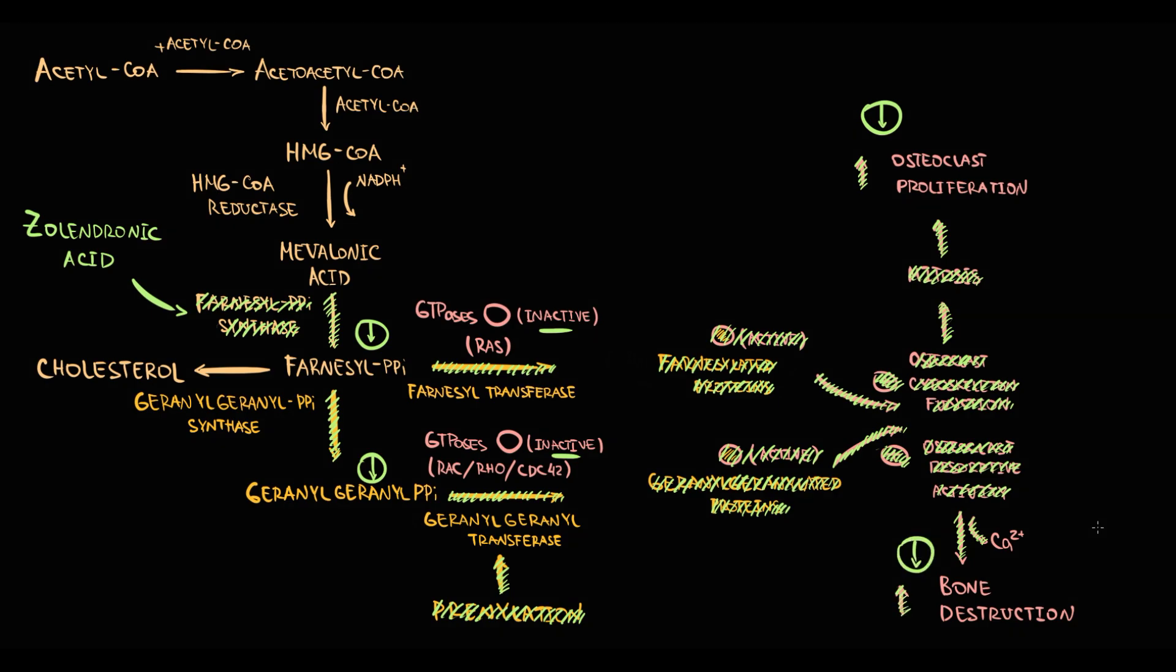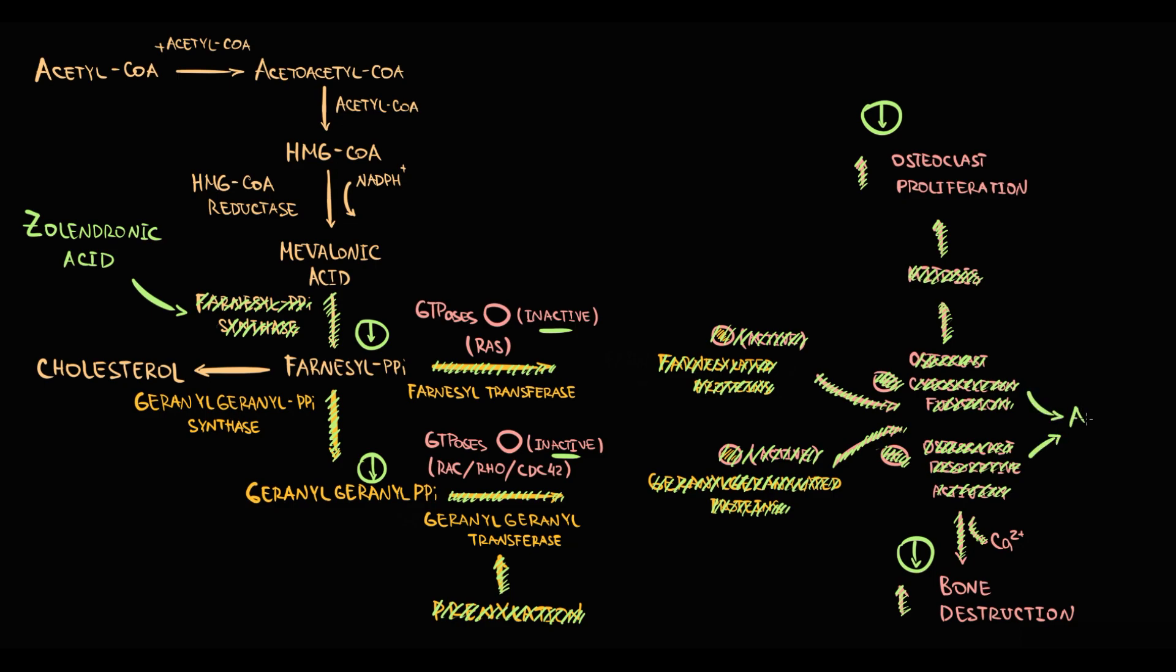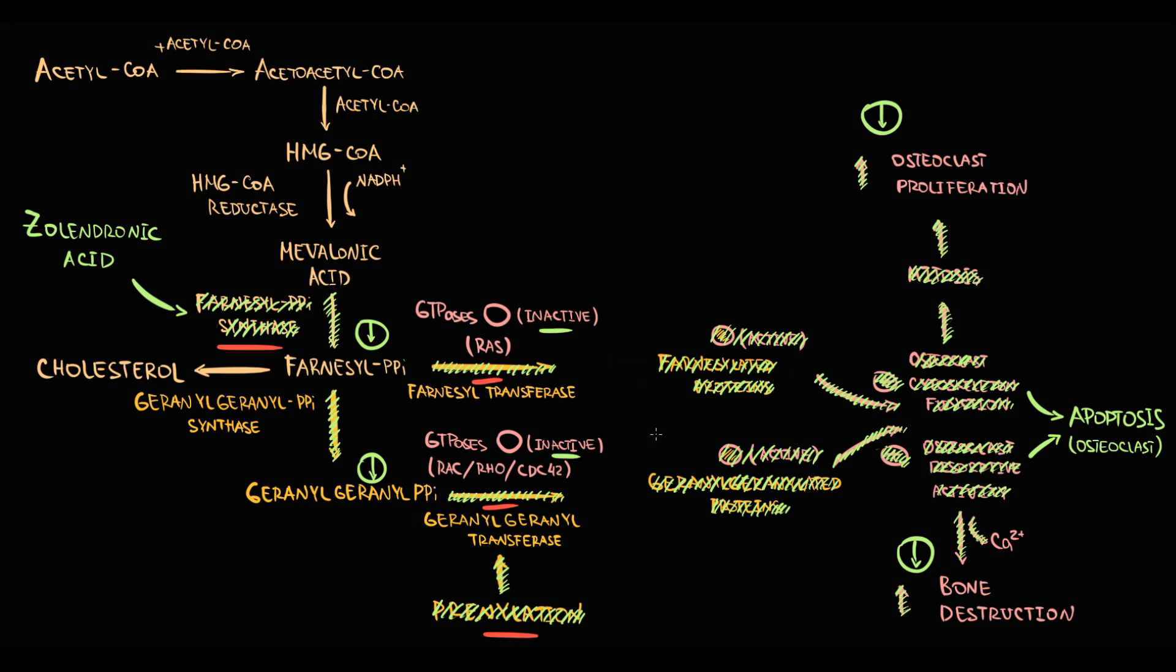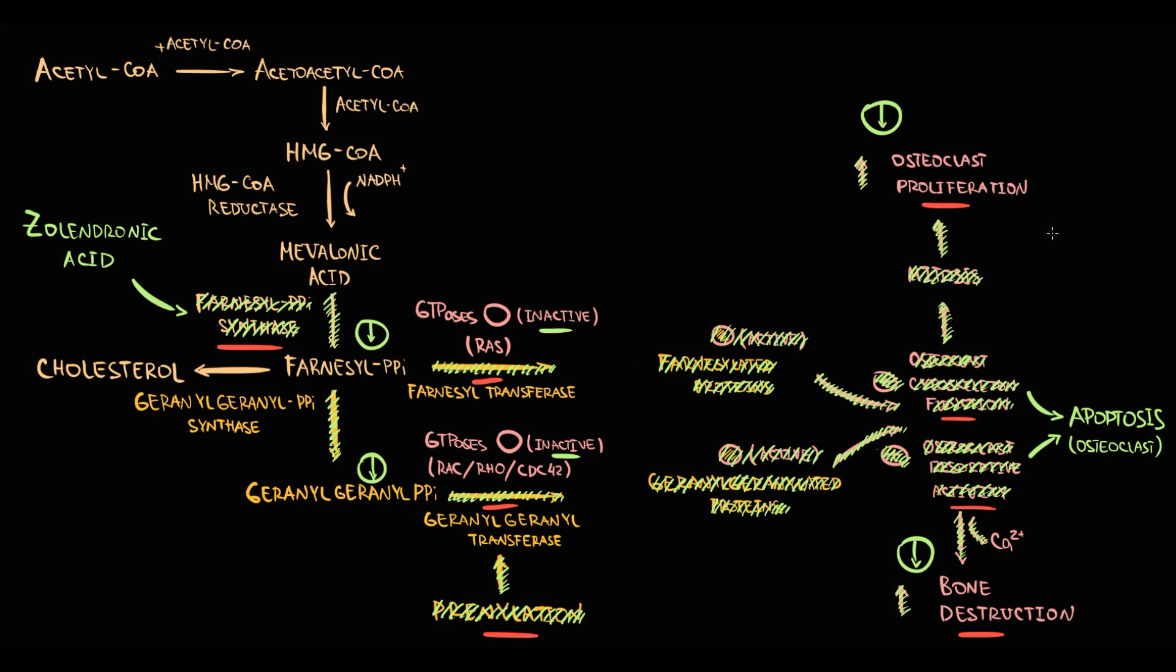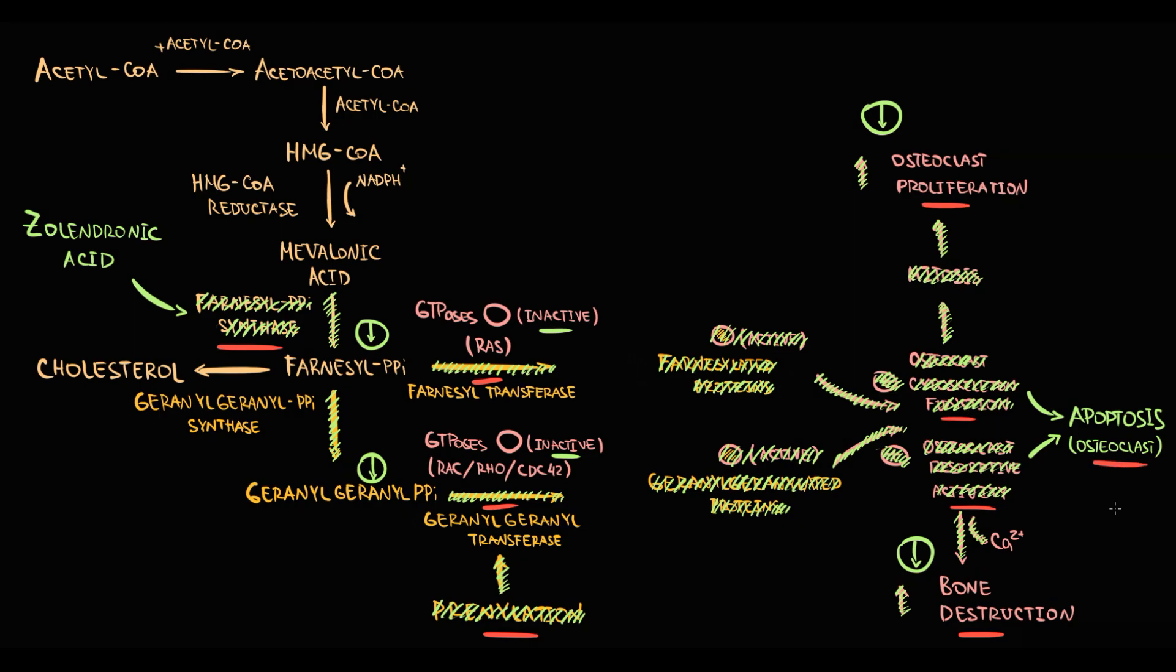At some point, such severe disruption of osteoclast homeostasis induces apoptosis of osteoclasts. So zoledronic acid, by inhibition of farnesyl pyrophosphate synthase, disrupts prenylation of GTPases. By this it inhibits osteoclast resorptive capacity, decreases osteoclast proliferation rate, and moreover, it induces apoptosis of osteoclasts.